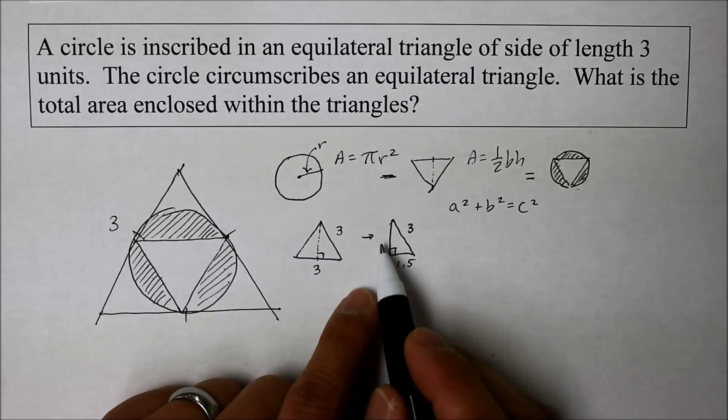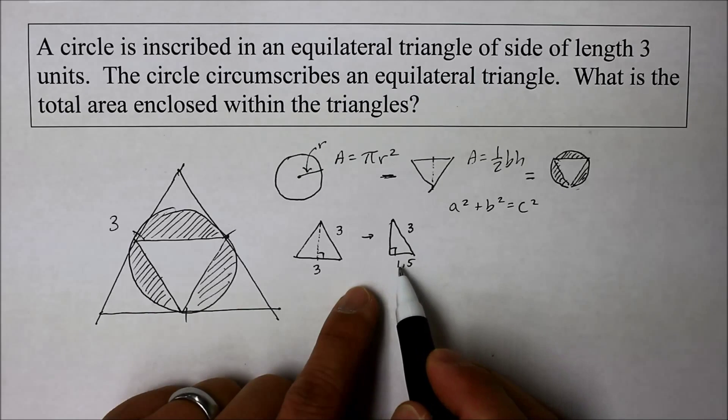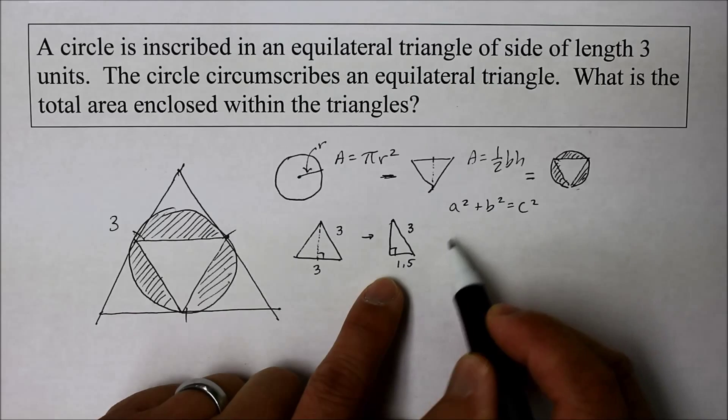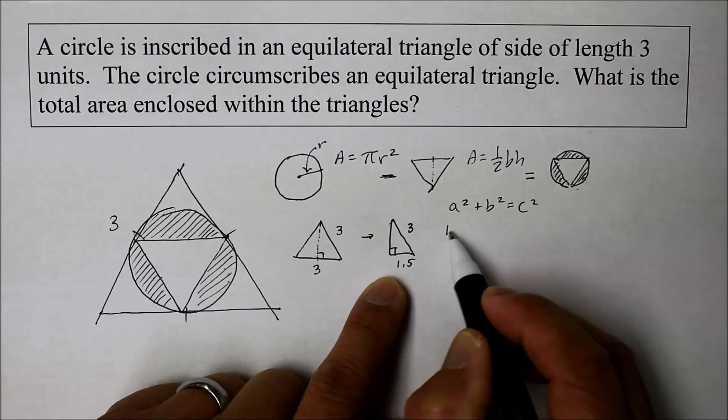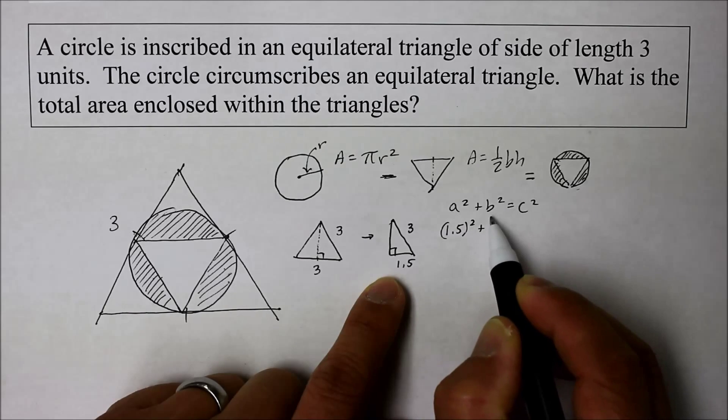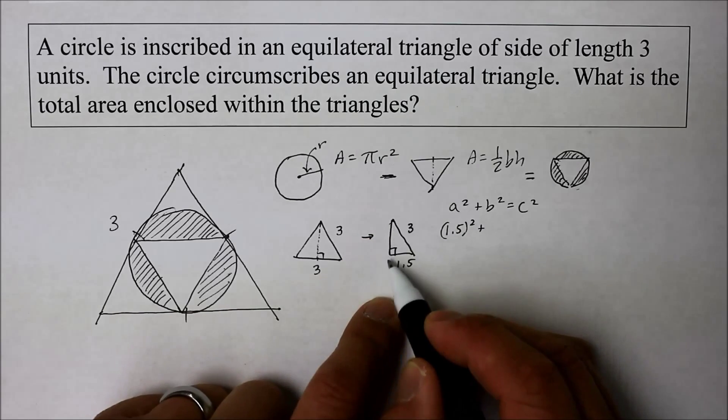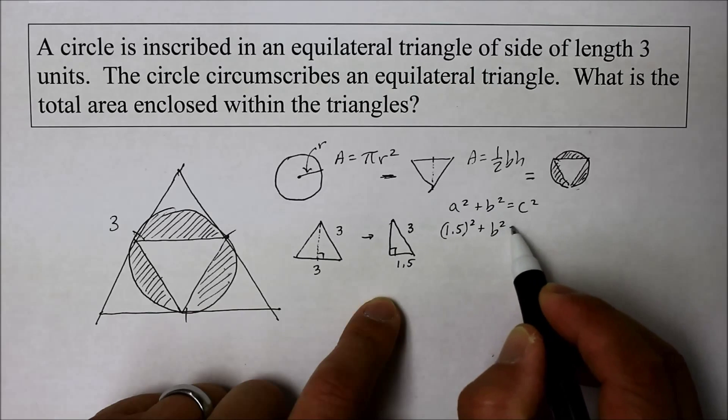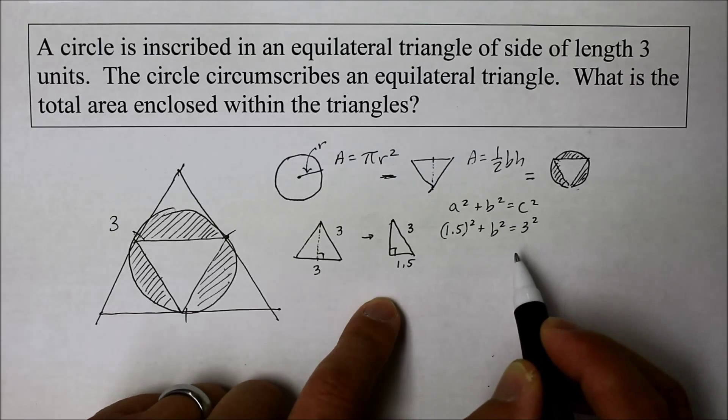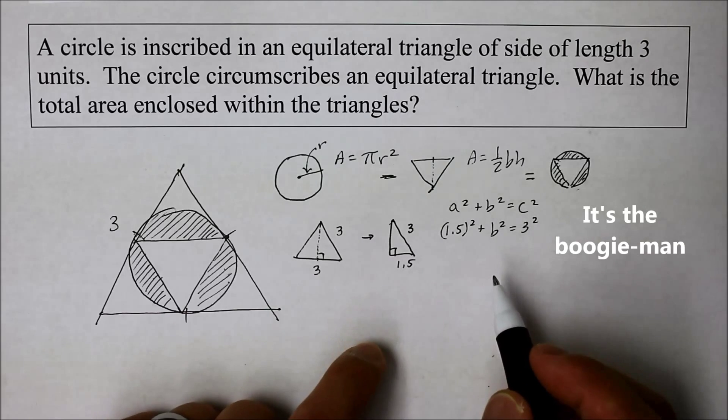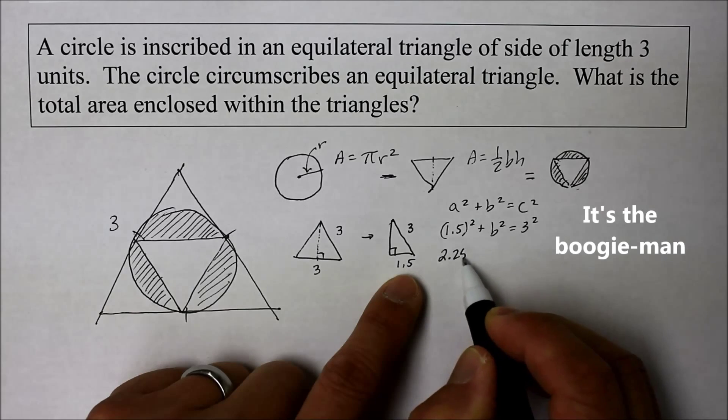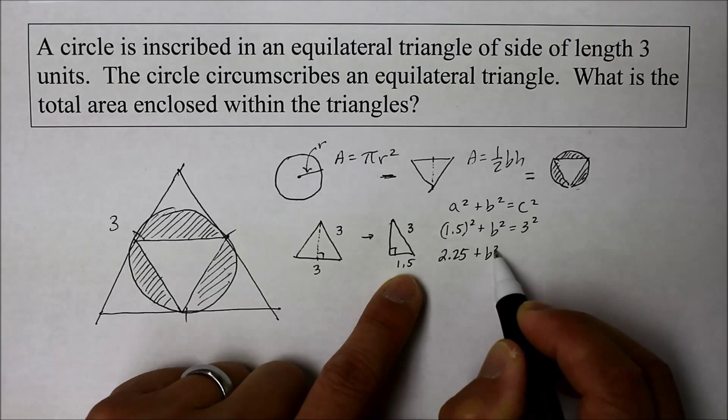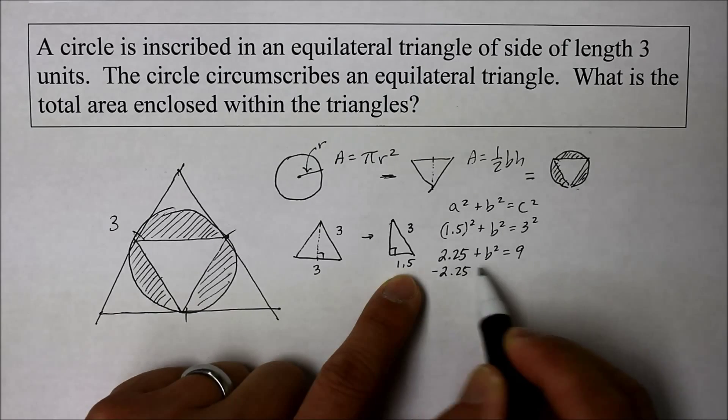It really does not matter which of the legs is the a or the b. So let's just call this the a. So this is 1.5 squared. And b is what we do not know, which is the height. And the c is the hypotenuse of three. So 1.5 times 1.5 is 2.25 plus b squared equals 9. Solve for b by subtracting 2.25 from both sides of the equation.